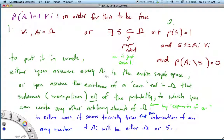To put it in words, either every Ai is the entire sample space, or you have to assume the existence of a core set within the sample space that I call S, that subsumes or monopolizes all of the probability to which you can unite any other arbitrary elements of Ω by expansion of OR.